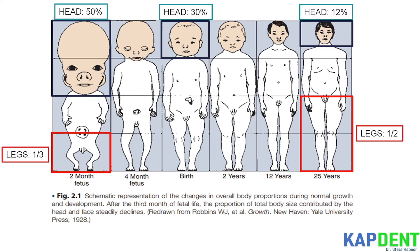In fetal life, that is at about the third month of intrauterine development, the head takes up almost 50% of the total body length, while the limbs and trunk are still rudimentary and underdeveloped. By the time of birth, the trunk and limbs have grown faster than the head, so the proportion of the entire body devoted to the head is decreased to about 30%. This trend continues, resulting in a progressive reduction of the relative size of the head to about 12% in adults.